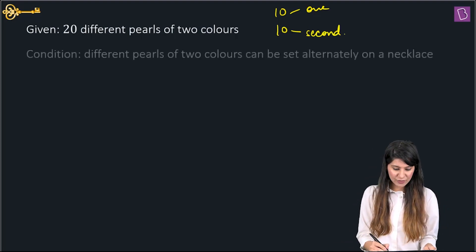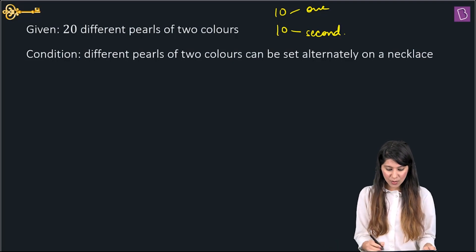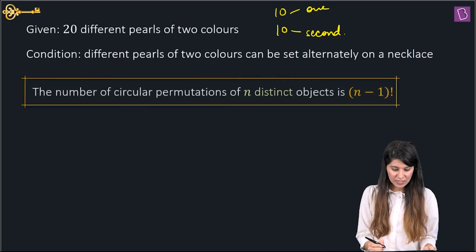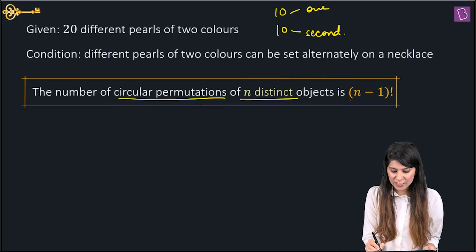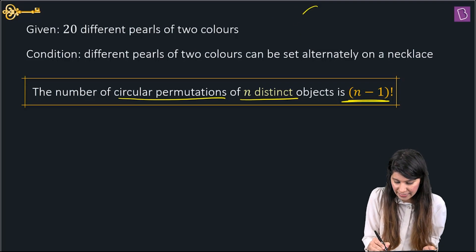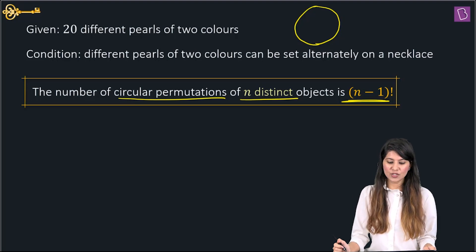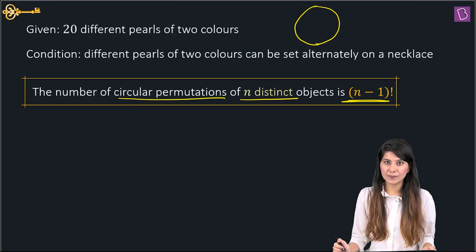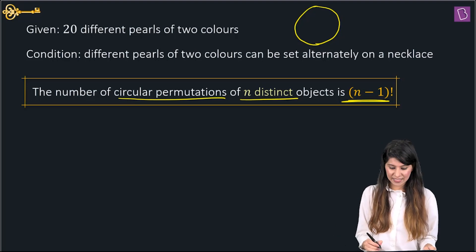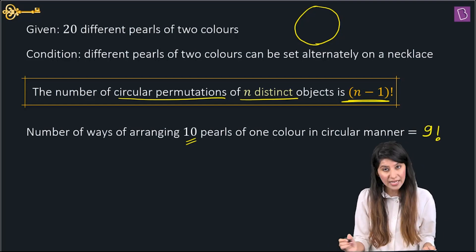The condition given is that different pearls of two colors can be set alternately on the necklace. What we know about circular permutation is that the circular permutation of n distinct objects is (n−1) factorial. So suppose this is a round necklace, and we are arranging 10 pearls of one color in a circle — that can be done in 9 factorial ways.